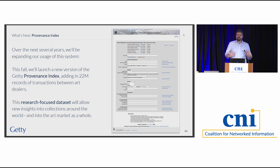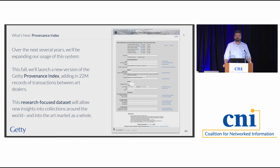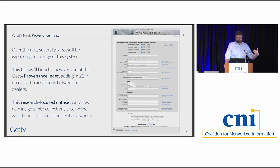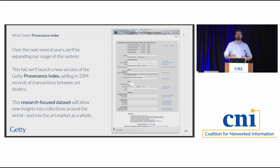That's what we've been building out over the past six years at the Getty, and we're continuing to do it. Over the next several years we're going to add more systems into this ecosystem. This fall, we're working on the Getty Provenance Index — adding another 22 million records of transactions between art dealers. It's a research dataset where we've leaned into data complexity, because its goal is mostly to enable professionals in the field to find new insights into their collections and the art market. Not many 12th graders are interested in transcriptions of dealer stock books from the 1800s, but it's critical to a lot of people's work.